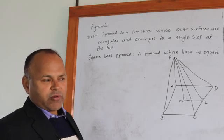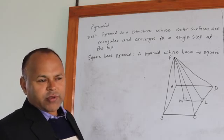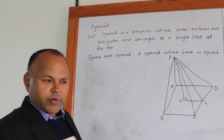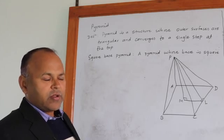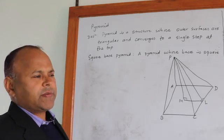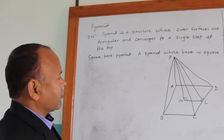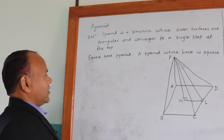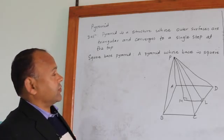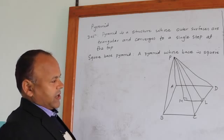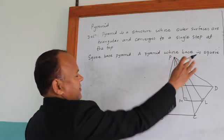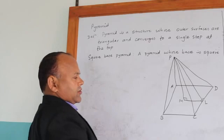There may be triangular base pyramid, circular base pyramid, pentagonal base pyramid, or rectangular base pyramid. Different types of pyramid are there. Out of them today we will discuss about the square base pyramid. A pyramid whose base is square is called the square base pyramid.